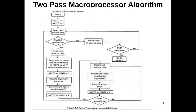Now we will move on to the two-pass macro processor algorithm. As the name indicates, this algorithm requires two passes: pass 1 and pass 2. First we will see the flowchart for pass 1. The input to pass 1 is the source program containing macro definitions and macro calls.